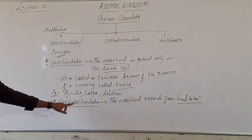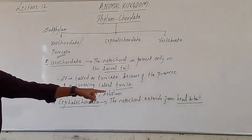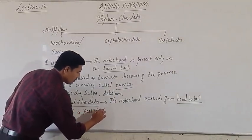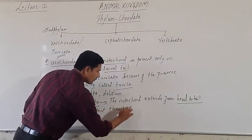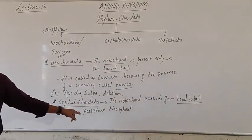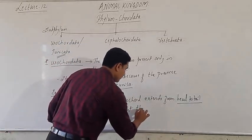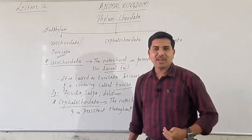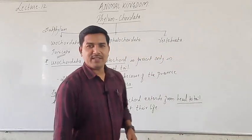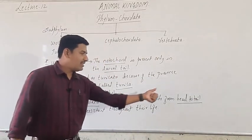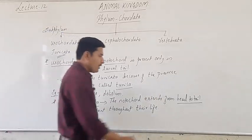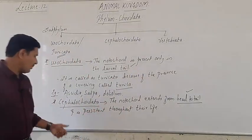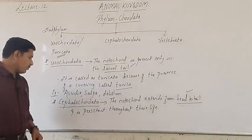Look at this. The notochord extends from head to the tail region and is persistent throughout their life. This point is most important — head to tail region. In Urochordata, it was present only in the larval tail region. This is most important. The notochord extends from head to tail and is persistent.